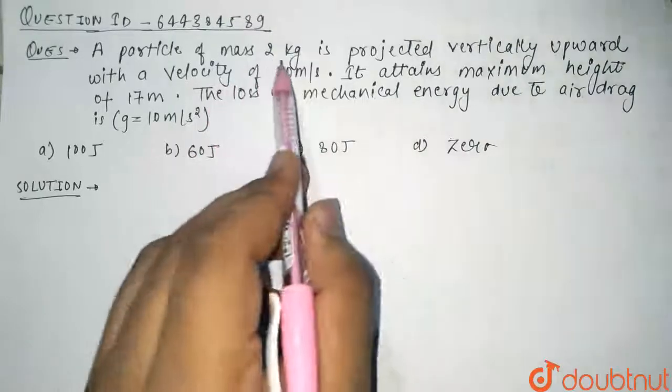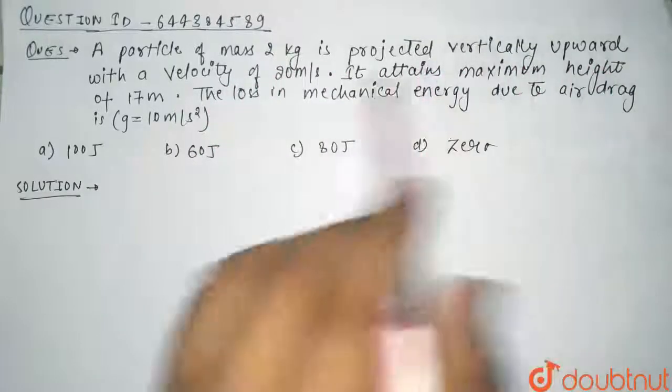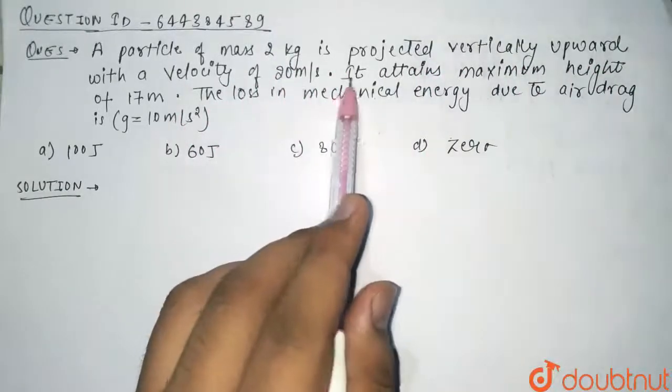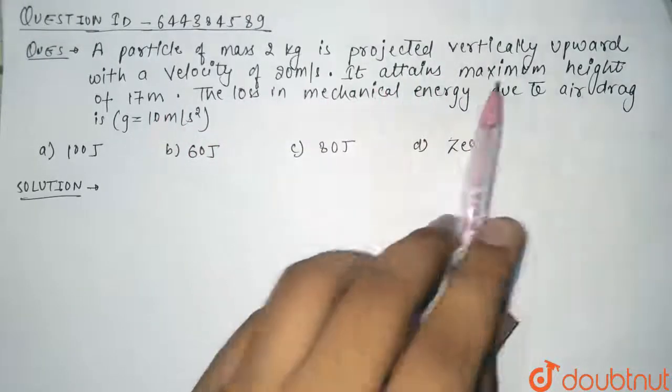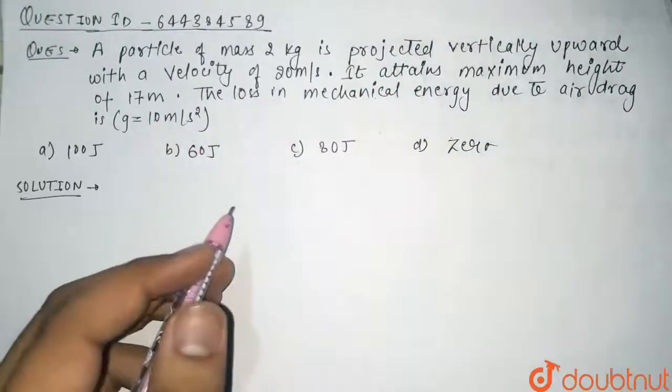A particle of mass 2 kg is projected vertically upward with a velocity of 20 meters per second. It attains maximum height of 17 meters. Loss in mechanical energy due to air drag. Now see guys, in this question we have been given a particle of mass 2 kg which is projected upward with a velocity of 20 meters per second.